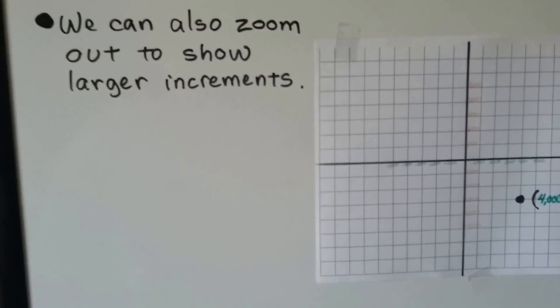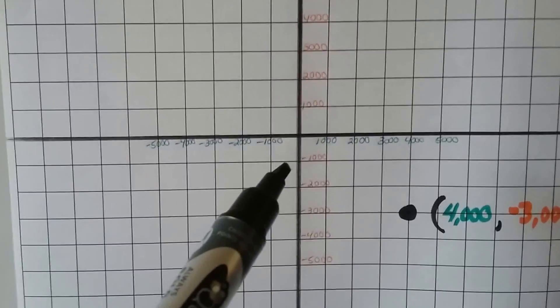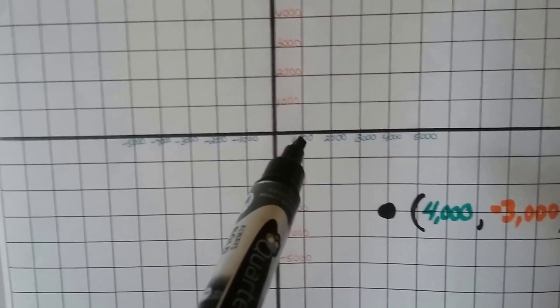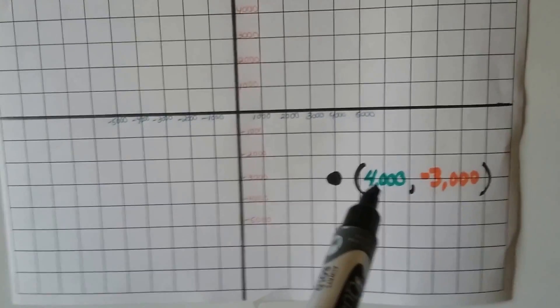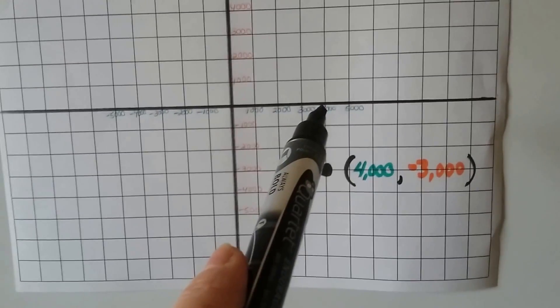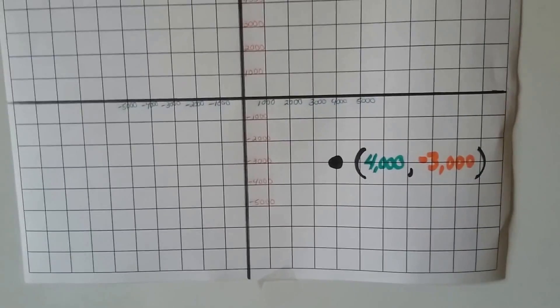And we can also zoom out to show larger increments. So we could say that each box, each line here is a thousand. So if we wanted to plot x is 4,000, y is negative 3,000, here's 4,000 for x, here's negative 3,000 for y, it would put us right there.